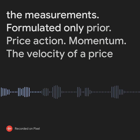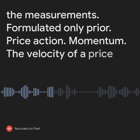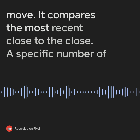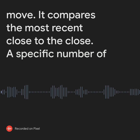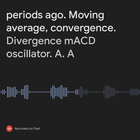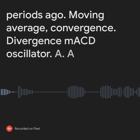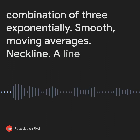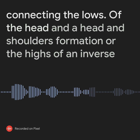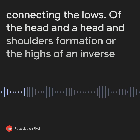Measured moves: a price target based on using measurements formulated on the prior price action. Momentum: the velocity of a price move; it compares the most recent close to the close a specific number of periods ago. Moving Average Convergence Divergence (MACD) oscillator: a combination of three exponentially smoothed moving averages.